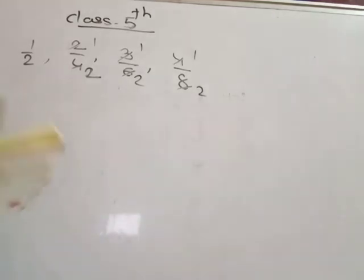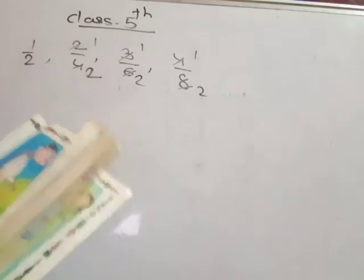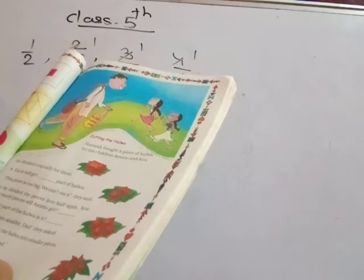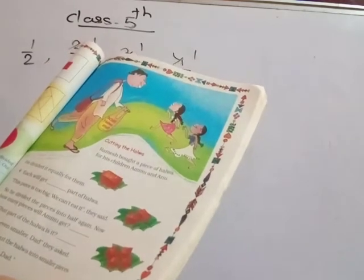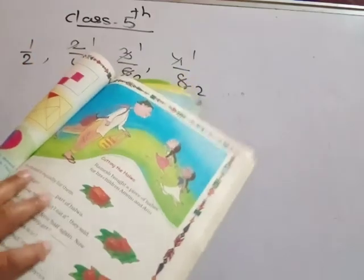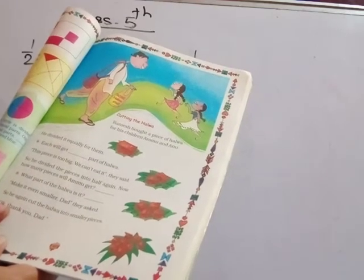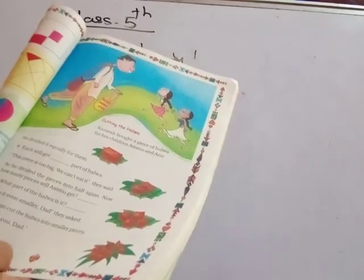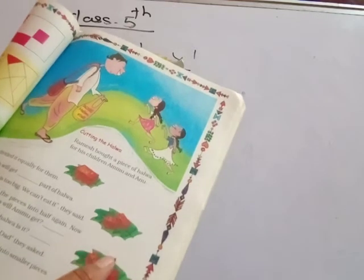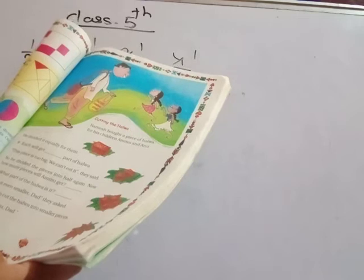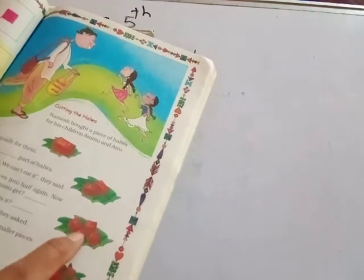Next one: cutting the halwa. Ramesh bought a piece of halwa for his children Ammu and Anu. He divided it equally for them — each will get half, meaning 1/2 part of the halwa. Then this piece is too big, we can't eat it, they said. So he divided the pieces into half again — these two parts are divided again into four parts.